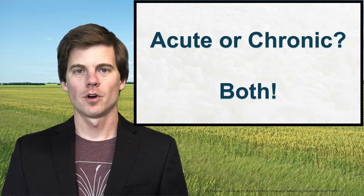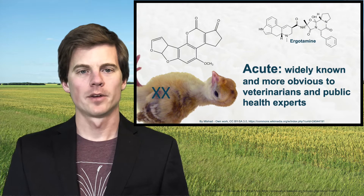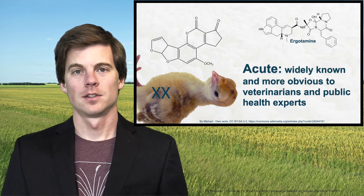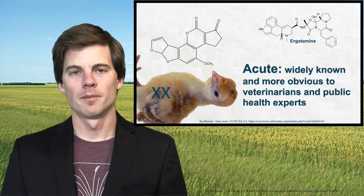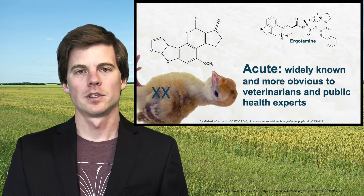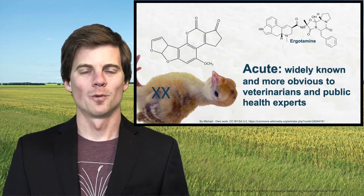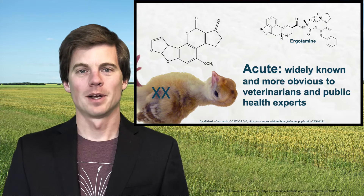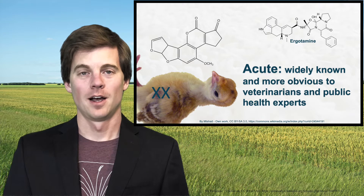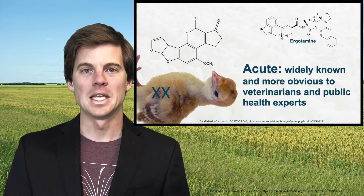For mycotoxins, acute or chronic — of course both are relevant. Today we're going to talk about just one mycotoxin, and that will be aflatoxin. Ergotamine is another one I mentioned in the previous video that would also have acute effects, but today it's mostly aflatoxin. If you remember from episode one or two, when we talked about the turkey poults and the acute toxicity — they were fed contaminated feed and they all died within days to weeks. They were sick immediately.